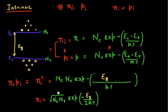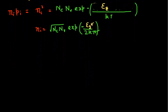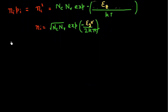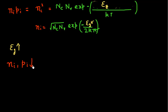This is a very important and profound formula. It tells us how the number of electrons and holes in an intrinsic semiconductor varies as a function of band gap and temperature. If I increase my band gap, I make this exponential term more negative, reducing its value. So increasing the band gap decreases the number of electrons and correspondingly the number of holes in my intrinsic semiconductor, and it's decreasing exponentially.